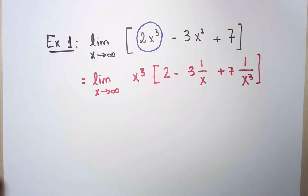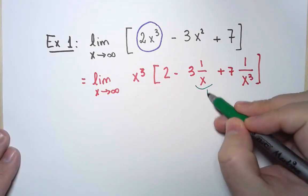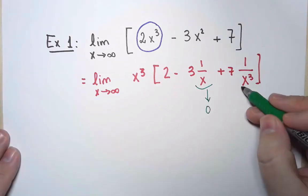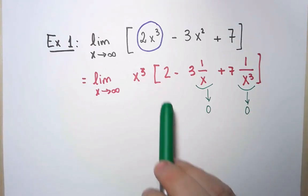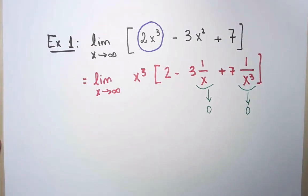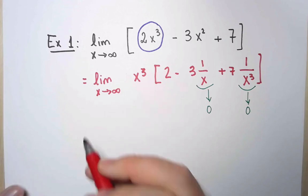This is what happens if I factor out x cubed. And now, once I've done that, I notice that this term, 1 over x, approaches 0 as x goes to infinity, and this term also approaches 0 as x goes to infinity. So in practice, I have something that goes to 2 times x cubed, and the limit of this is simply infinity.